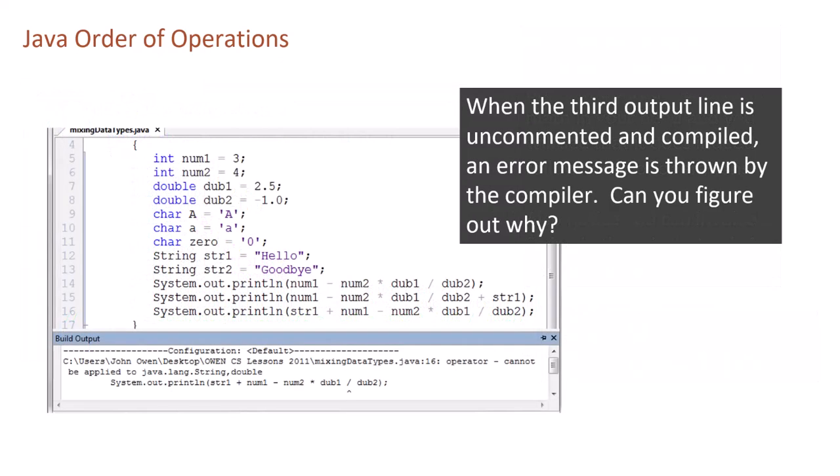When the third output line is uncommented and compiled, an error message is thrown by the compiler. Can you figure out why?